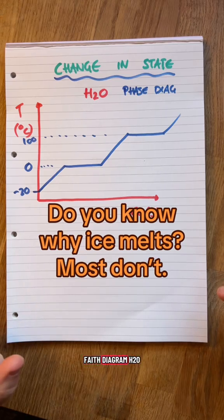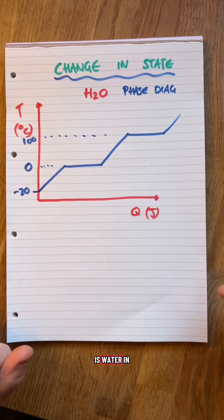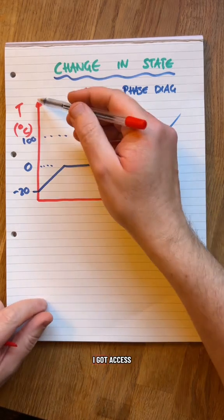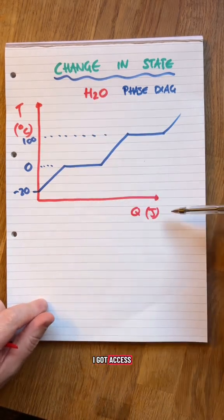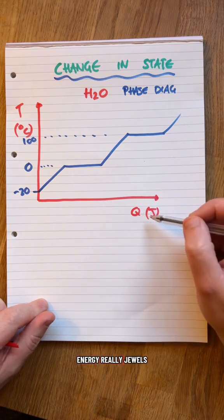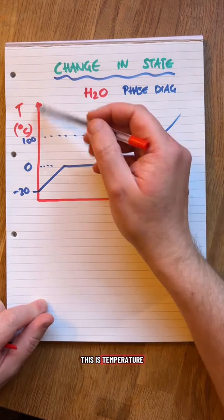This is my H2O phase diagram. H2O is water in some places. So this is a phase diagram. I've got axes. So Q is energy really, joules. This is temperature.